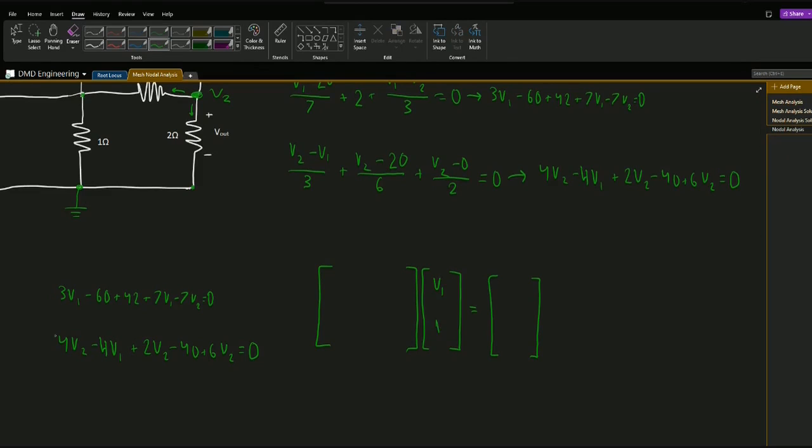Starting with my unknowns I know I have v1 and v2, and then I could just write in my equations. In the first equation I look to see how many v1's I have, looks like I have 3 plus 7 or 10, and then see how many v2's I have, looks like just negative 7. For the constants we have negative 60 plus 42 which is negative 18, but we see that we put the constant on the other side, so 0 plus negative 18 will just give us positive 18. For the second equation we'll see how many v1's we have, looks like just that negative 4, and v2's we have 4 plus 2 plus 6 or 12. The constants looks like we just have this negative 40 on the left side, move that to the right side you get positive 40.